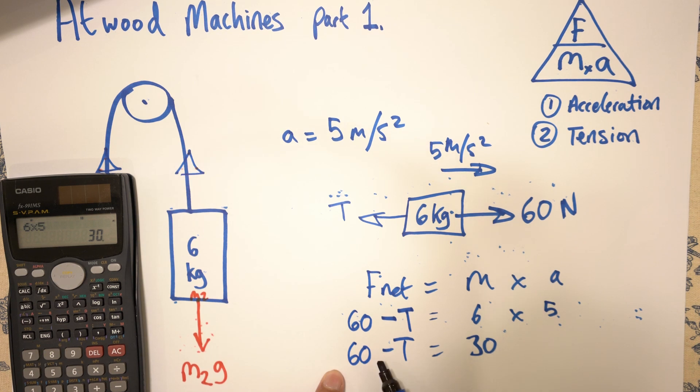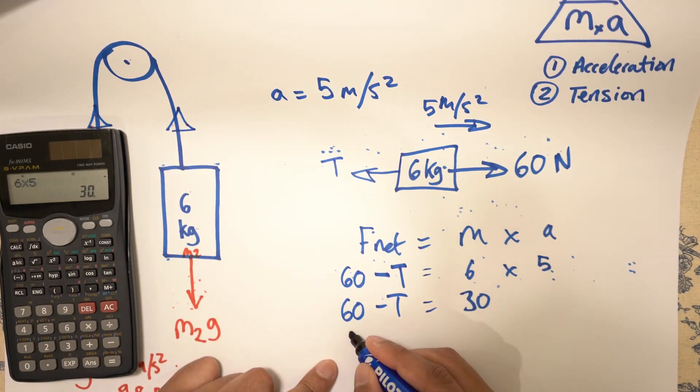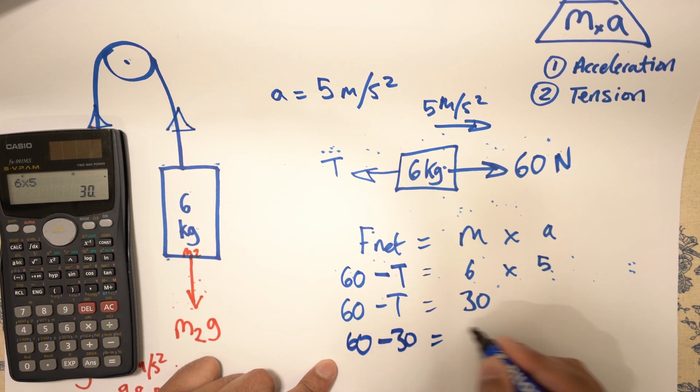And that 30, take it to the other side, it becomes a minus. So you end up with 60 minus 30 is equal to T. So the tension is 30 newtons.